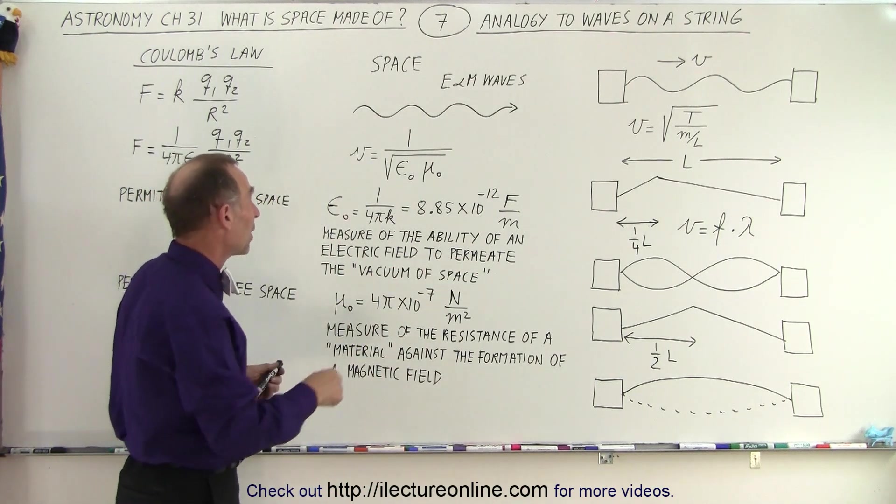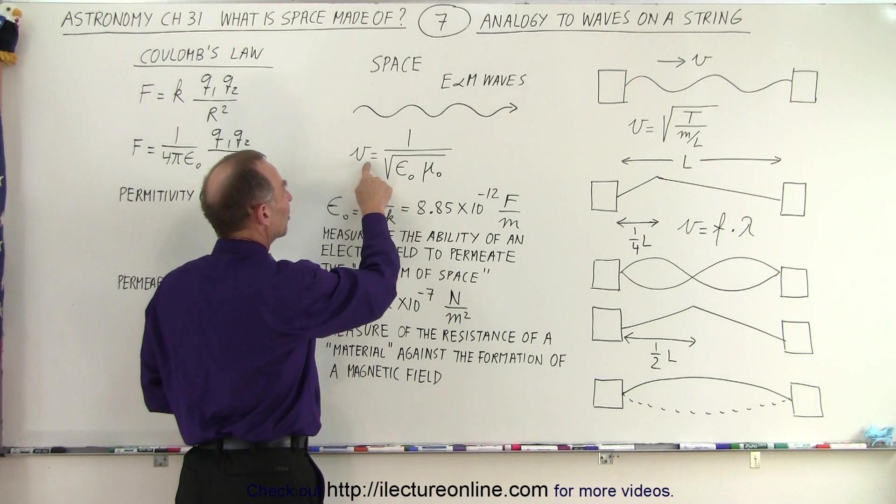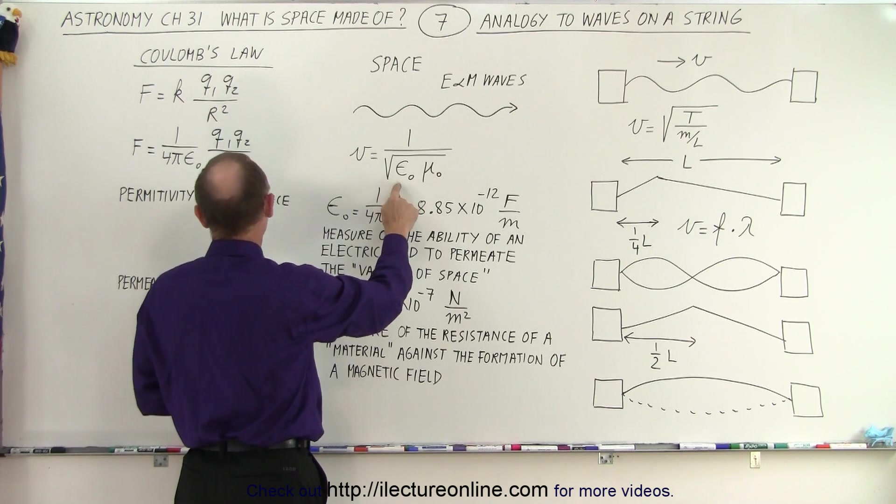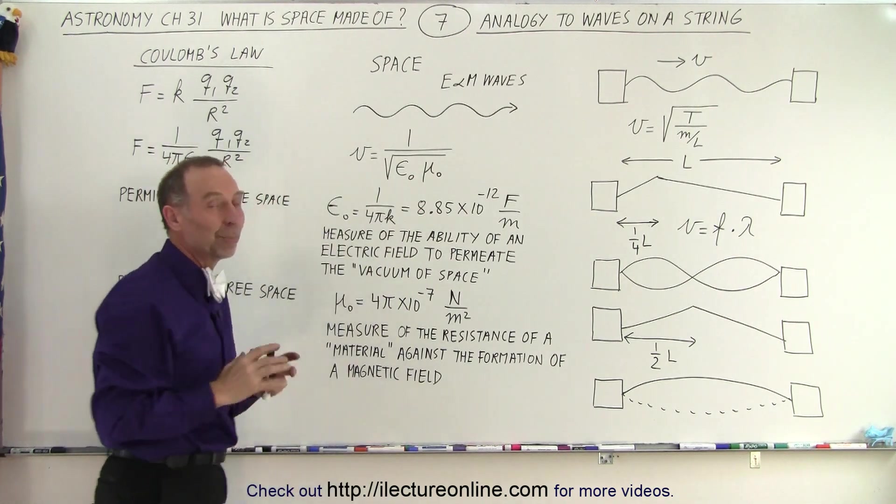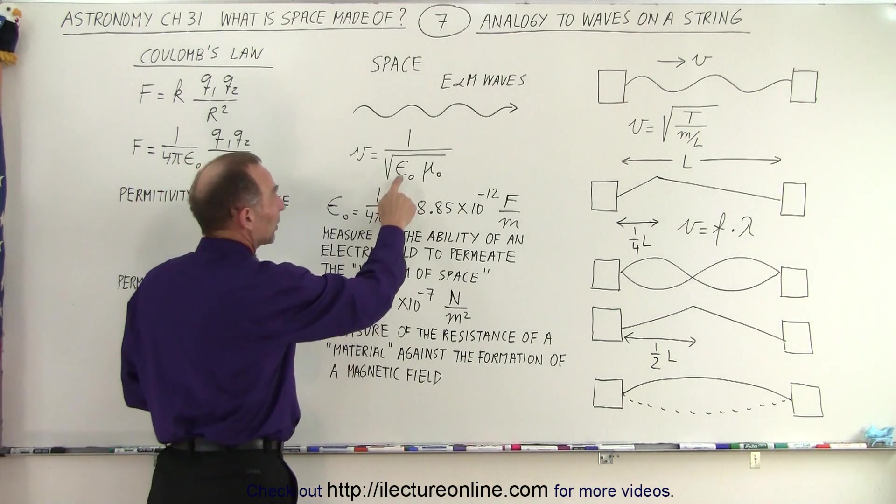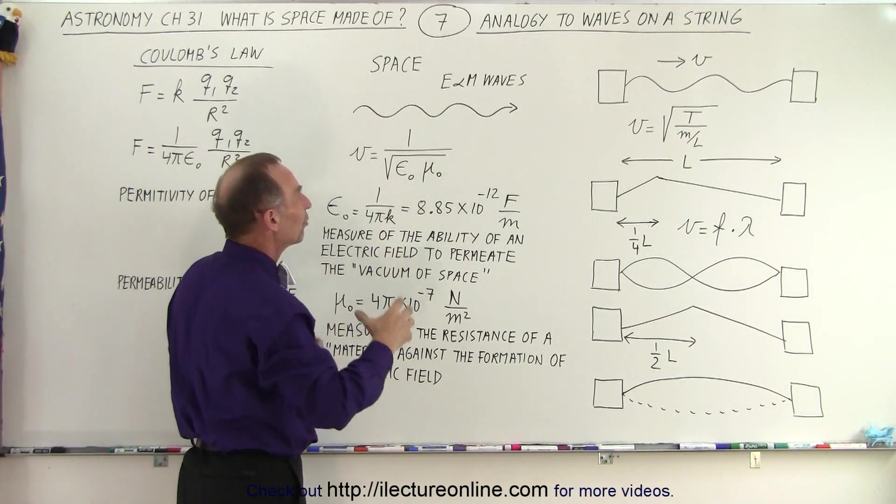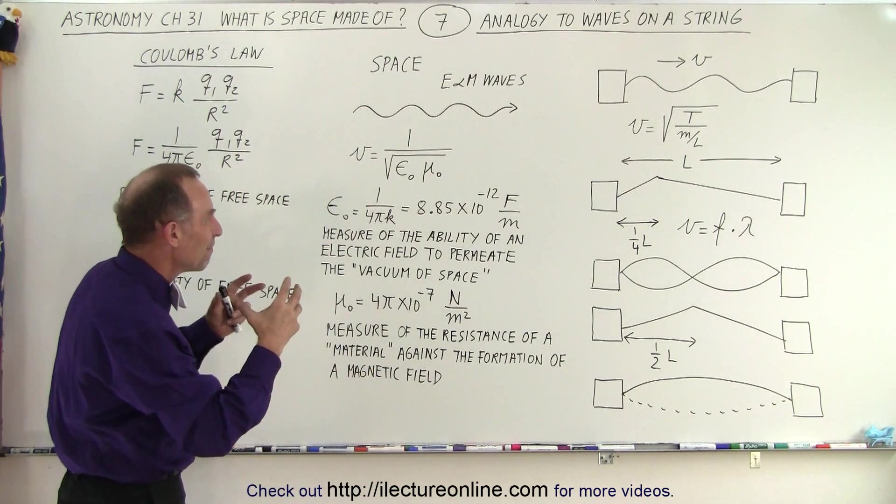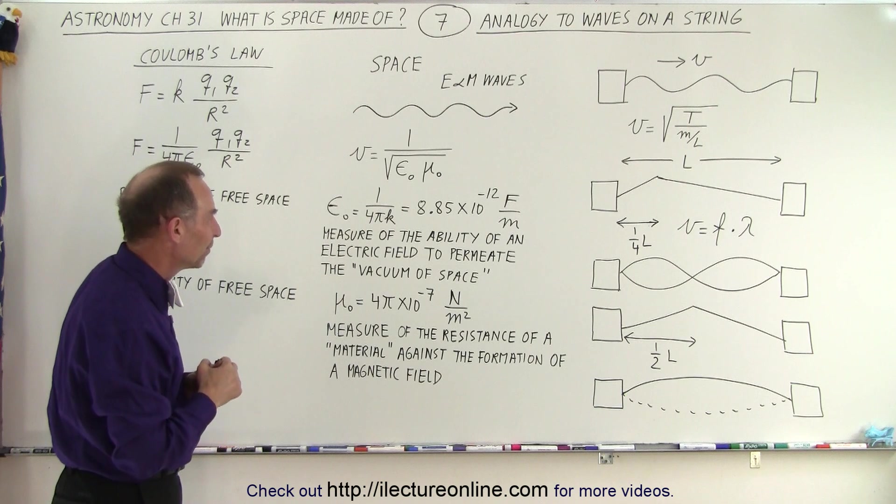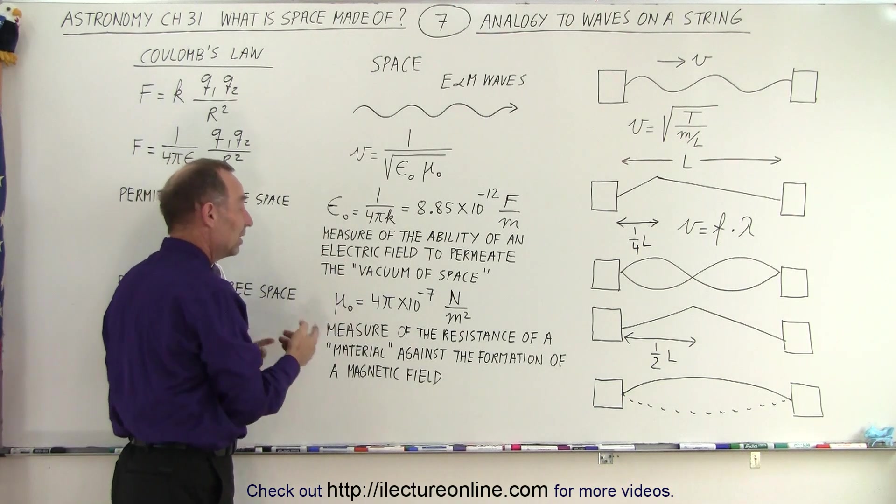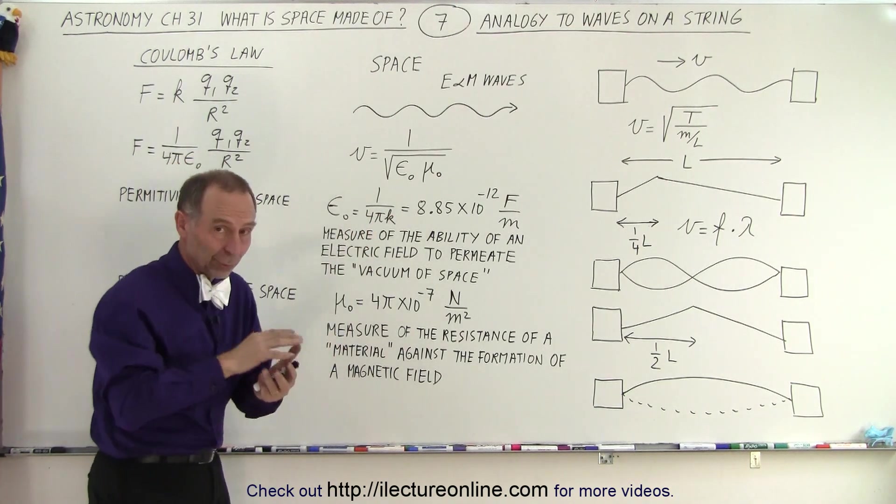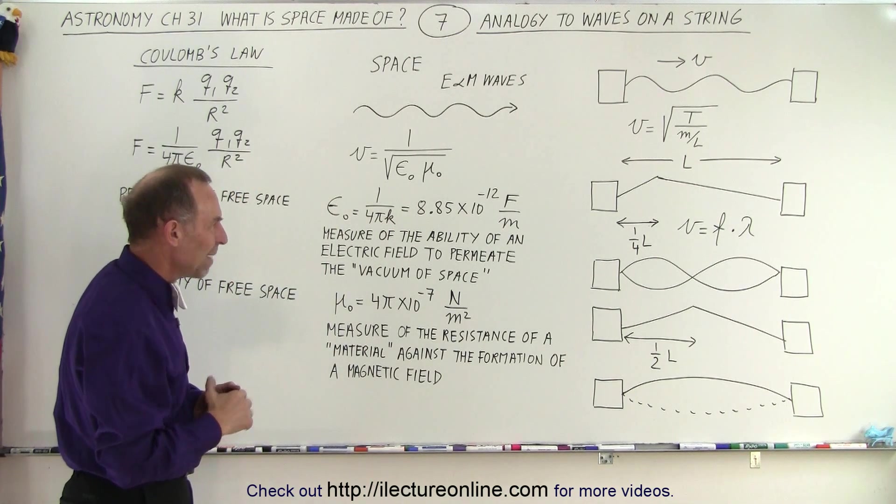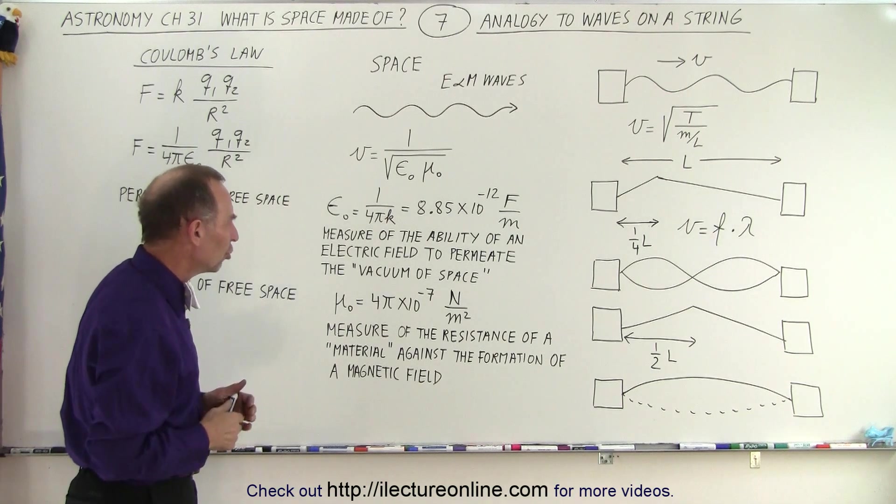It turns out that Maxwell came up with the brilliant equation where he said that the velocity is equal to one over the square root of what we call the permittivity of free space and the permeability of free space. The permittivity has something to do with electric field in space, and the permeability has something to do with the magnetism of free space. Here are the values of these two constants, and indeed if you plug that into your calculator you get three times ten to the eight, the speed of light. So Maxwell was brilliant in figuring out that relationship.